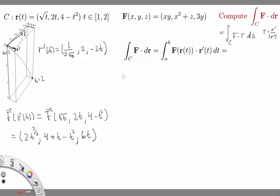So we have the integral from 1 to 2 of (2t^(3/2), 4 + t - t², 6t).